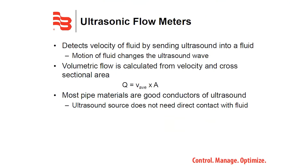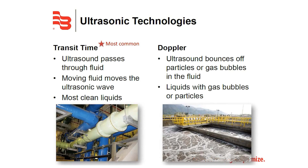Ultrasonic flow meters use sensors strategically mounted on a pipe to send and receive ultrasound. Together, these sensors calculate the velocity of the fluid inside the pipe. With velocity and cross-sectional area, you can calculate volume.